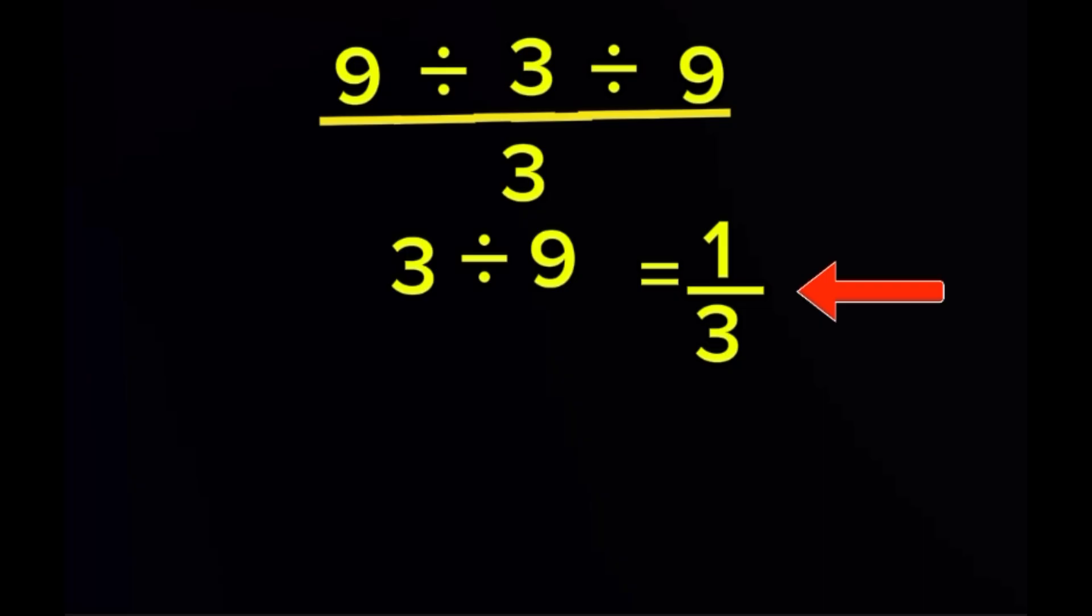No shortcuts, no assumptions. Now look at the bottom. We are dividing by 3. 1 third divided by 3 is the same as multiplying 1 third by 1 third. When you do that multiplication, the result is 1 ninth.